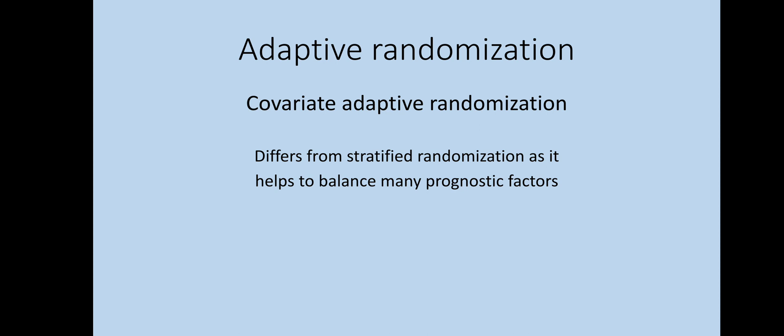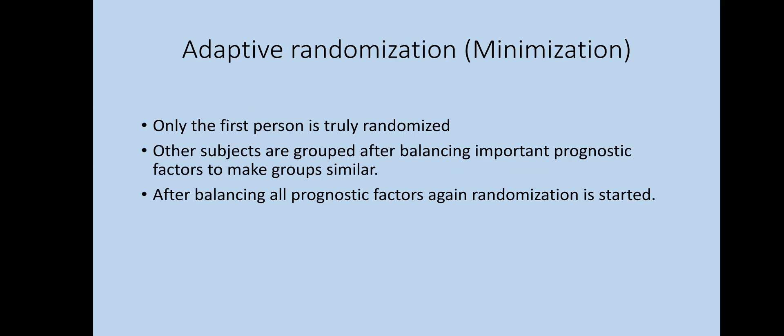There is another form called adaptive randomization, which has two main types. The first is covariate adaptive randomization, which differs from stratified randomization in that it helps to balance many prognostic factors simultaneously, while stratified randomization only balances one or two. The second important type of adaptive randomization is minimization: in this process, only the first person is truly randomized, and other subjects are grouped after balancing important prognostic factors to make groups similar. After balancing the prognostic factors, randomization by tossing can resume.